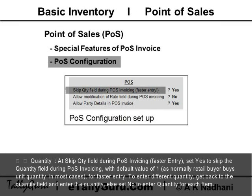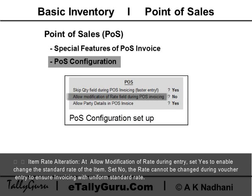Quantity: At 'Skip Quantity', set Yes to skip the quantity field during POS invoicing with a default value of 1. To enter a different quantity, get back to the quantity field and enter the quantity. Set No to enter quantity for each item.